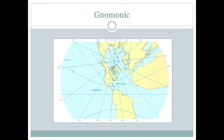A great circle is represented by a plane that would pass through the center of the globe, or the center of the Earth. So we can see that lines like every line of longitude would actually cut through the Earth and go right through its center. There's also one line of latitude that cuts through the center of the Earth, and that's the equator — which also shows up as a straight line on this map projection.